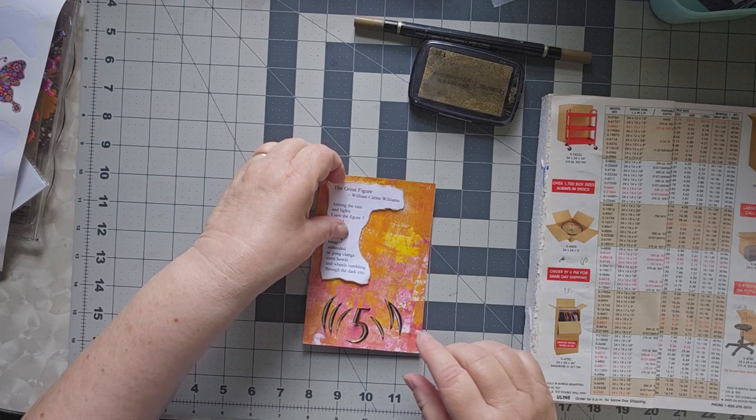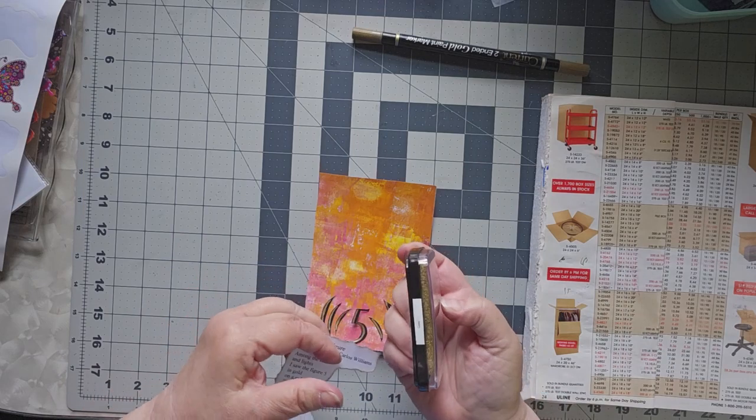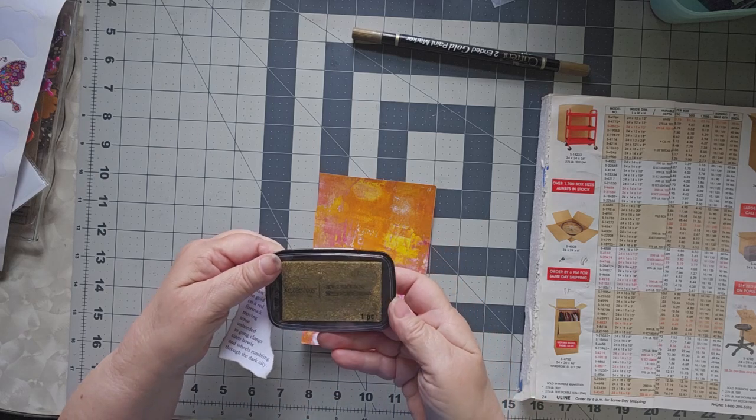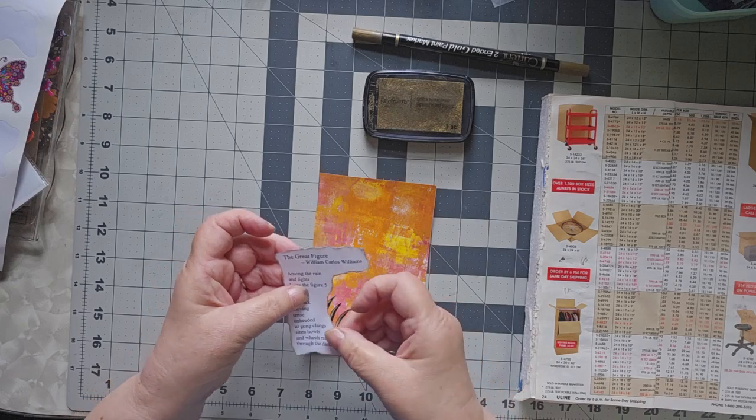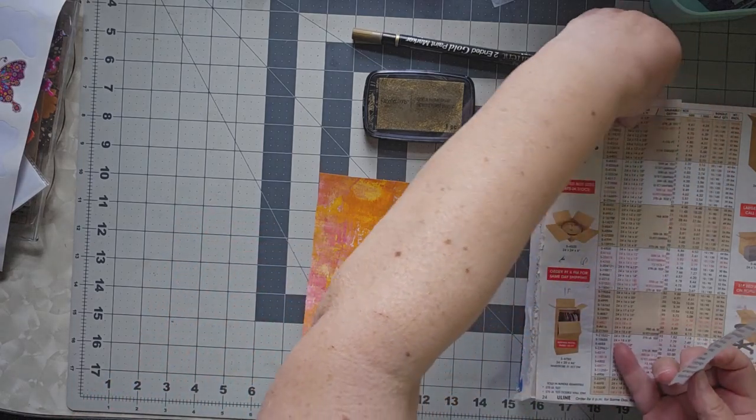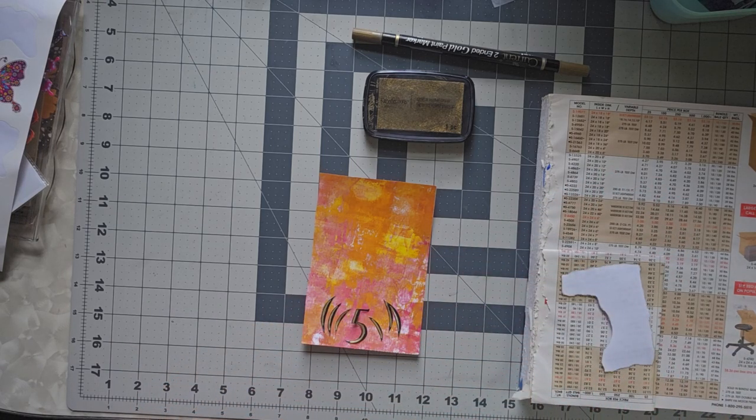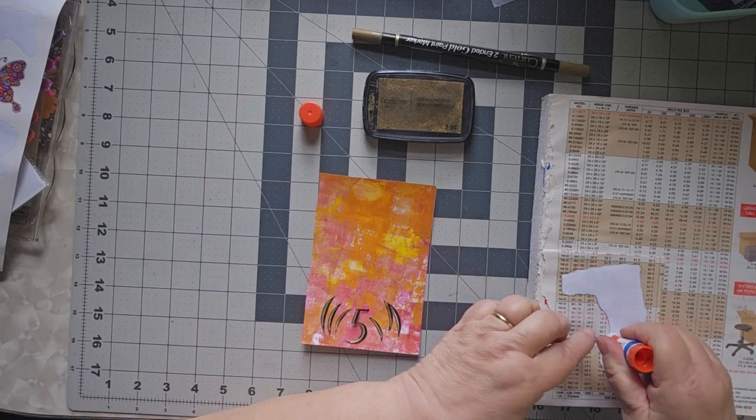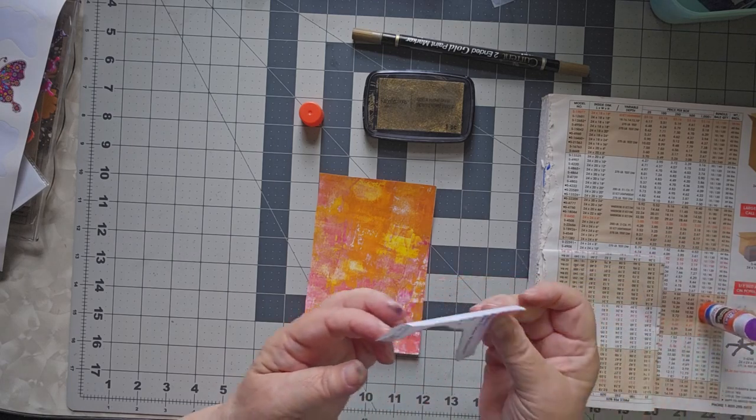So let me go ahead and put this down. I have used the Recollections Gold. I don't think it has a special name to it, just gold. And I went around the outside of this in gold. So let me take a minute and put that part down. And then I'll tell you how I did the five. Oh, my glory, was that interesting and a little bit of a pain in the neck. But I had fun with it, so that's what matters, right?